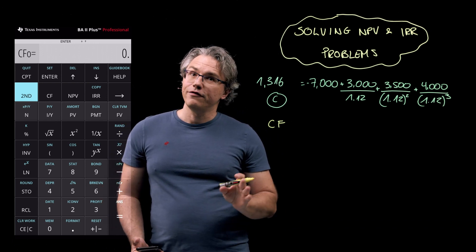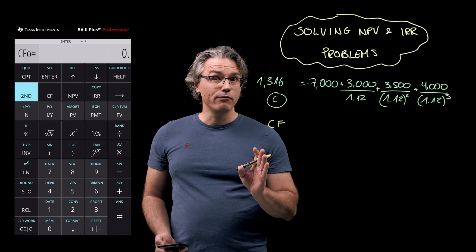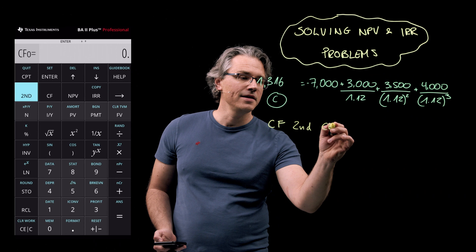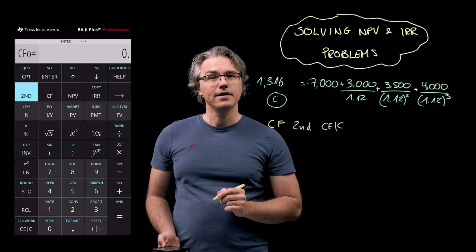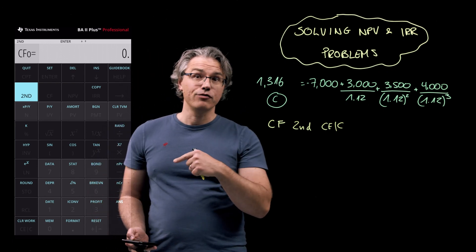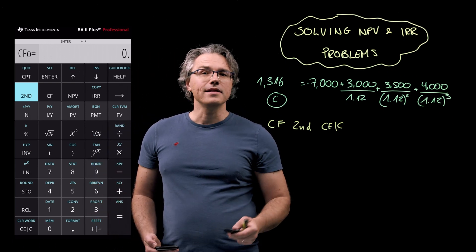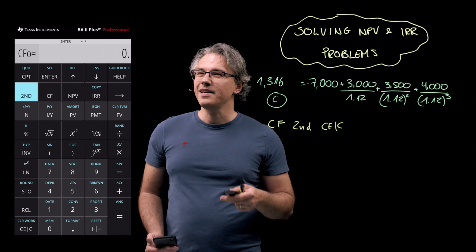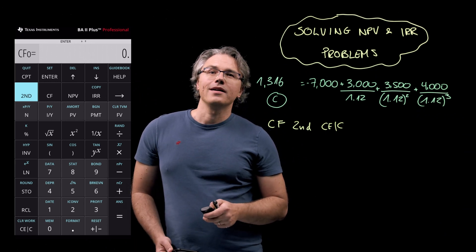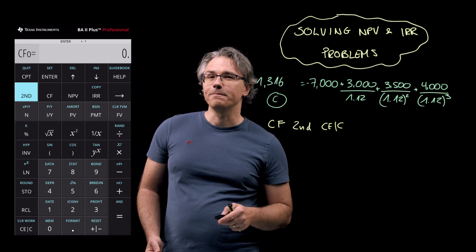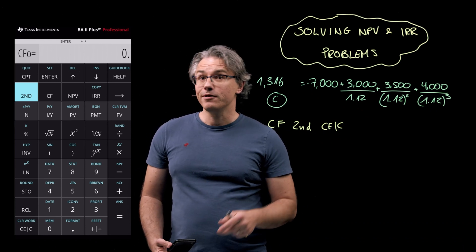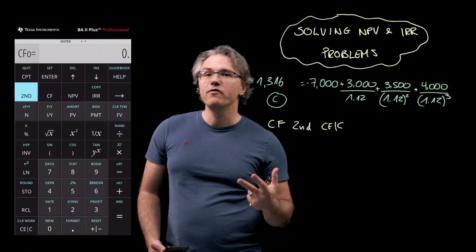Now before we go any further, let's make sure to clear the worksheet by pressing second followed by the CE/C key in the bottom left hand corner of your calculator keys. You can see that it has CLR work written on it, which stands for clear worksheet, and that's its secondary function.